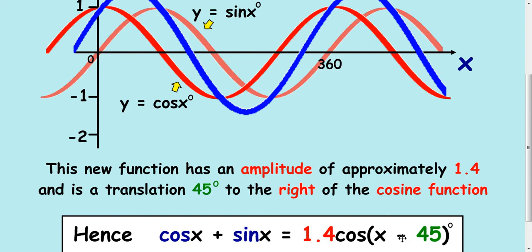you generate a cosine wave that's been shifted by 45 degrees to the right. And there's a new amplitude of 1.4 instead of the original waves having an amplitude of 1.